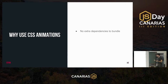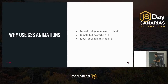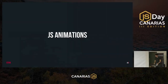To summarize: we want to use CSS animations because we don't have any extra dependencies to bundle, keeping bundle size small. They provide a simple but powerful API that can be sufficient for a wide variety of cases. In general, they are ideal for simpler animations, whereas as our animations become more complex we might look at JavaScript animations — which we'll do next.